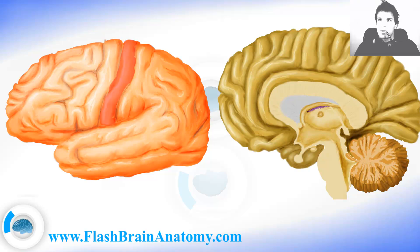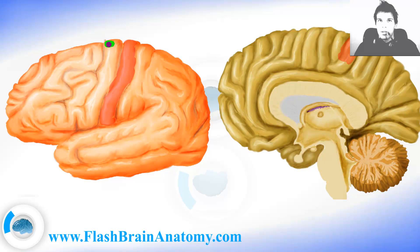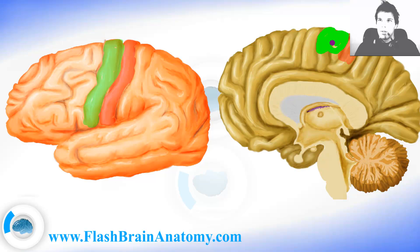Then we have the primary motor cortex and it's in the pre-central gyrus here. You can notice the same functional area on the other side of the brain. The reason why this is called the post-central and this is the pre-central is because of the central sulcus here — the gyrus posterior to it is the post-central and the gyrus anterior to it is the pre-central gyrus.